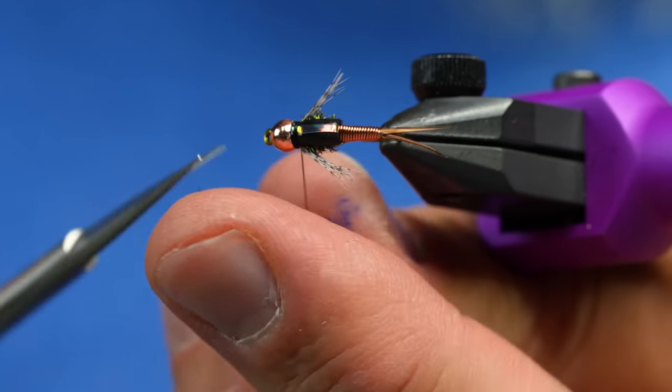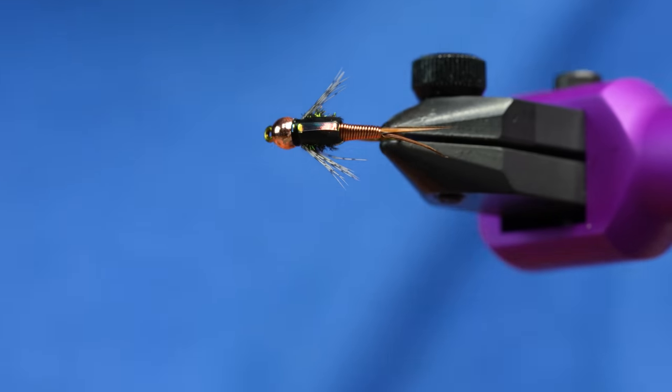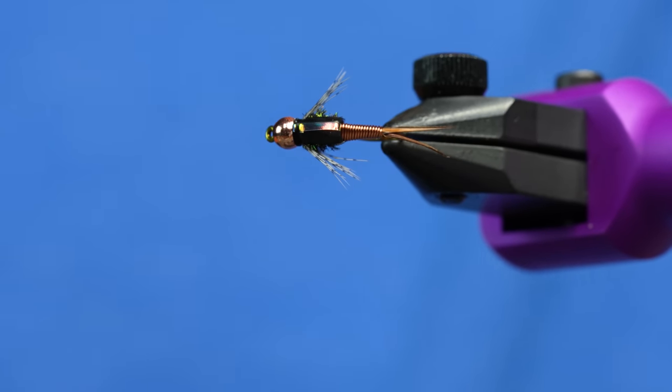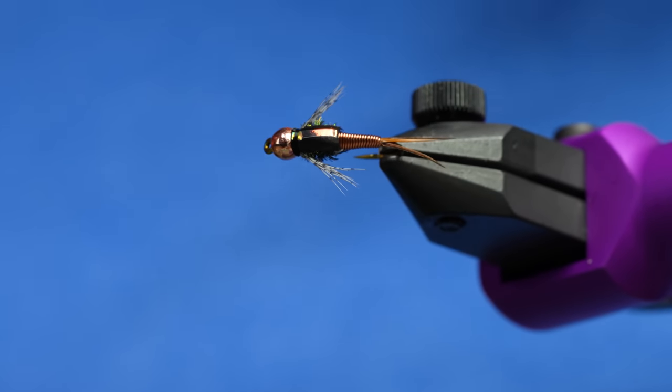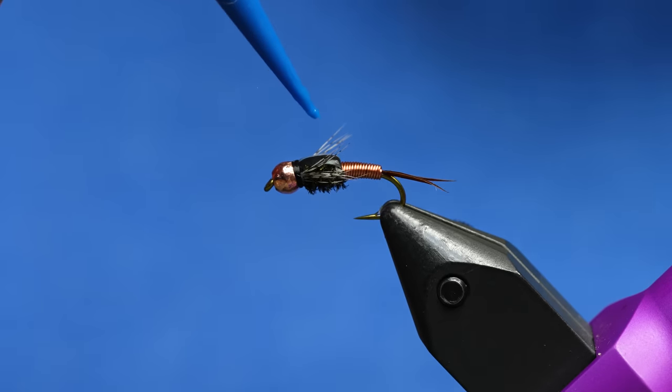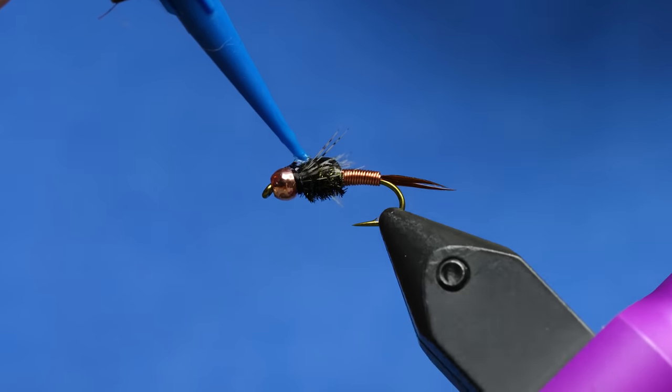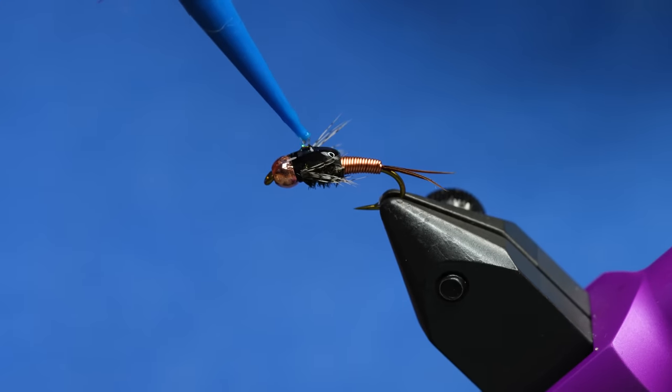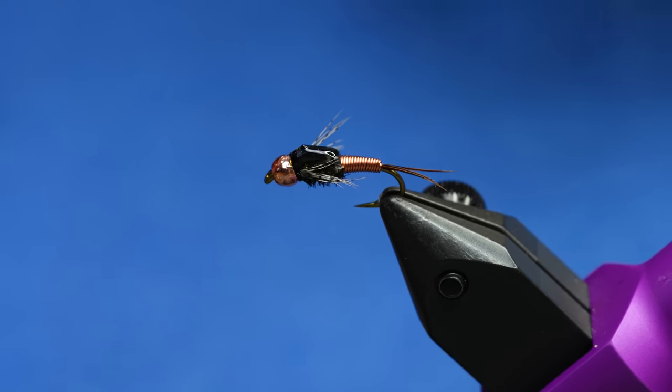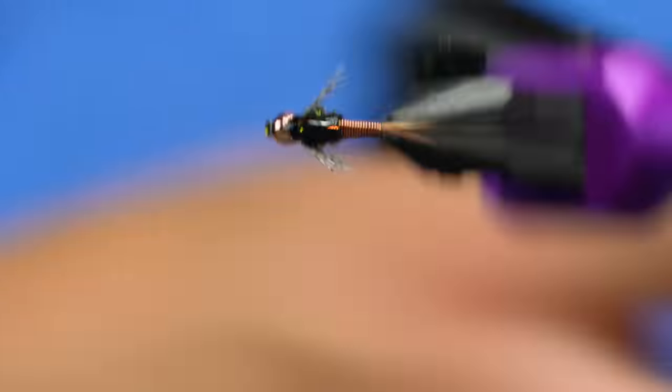Everybody knows that the old Copper John has a nice epoxy wing case. I'm just going to use some thin resin from Solar Res. We'll just put that right on top of the fly. We're just going to paint it. We don't really need to bulk it up a little bit. Maybe we'll do that with another layer if we have to. All right. That's where we want it.